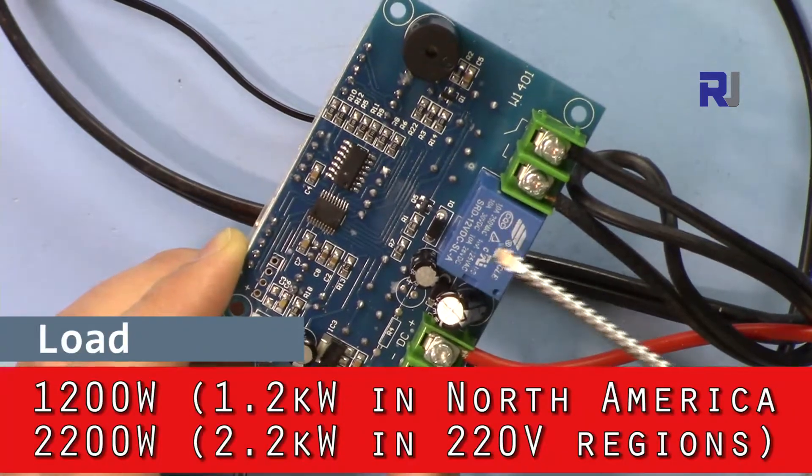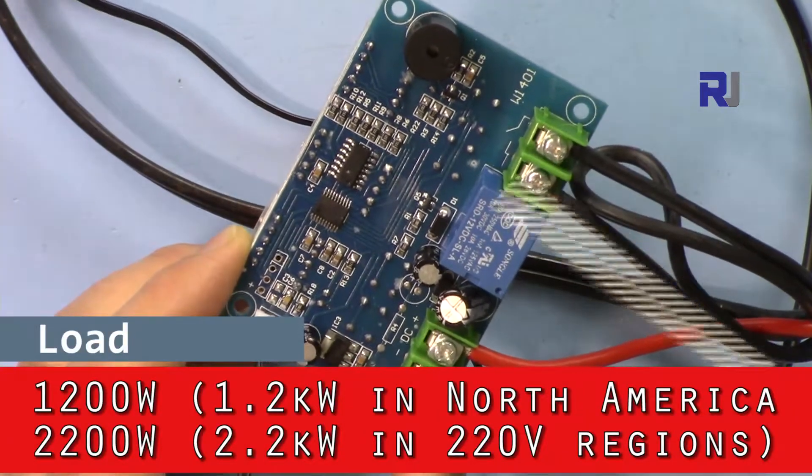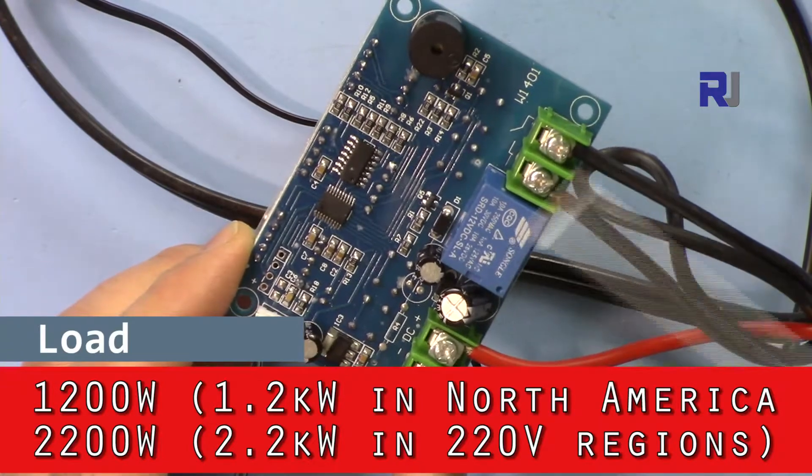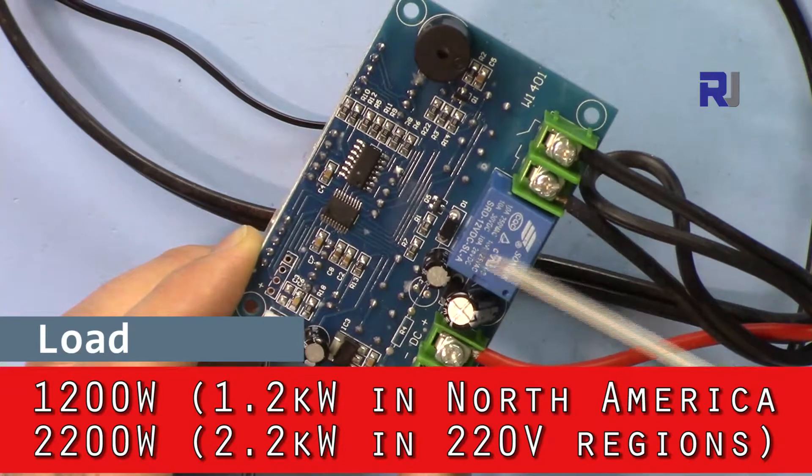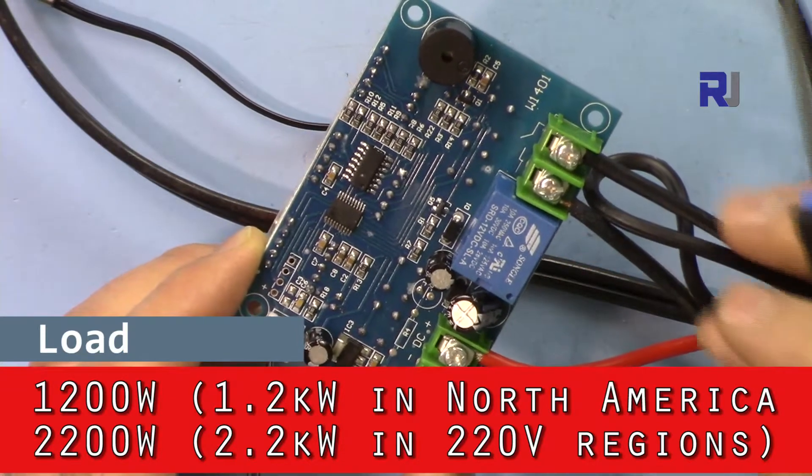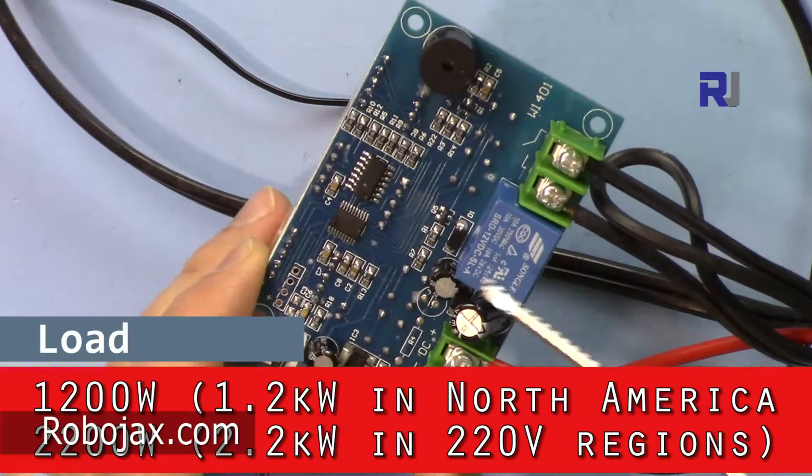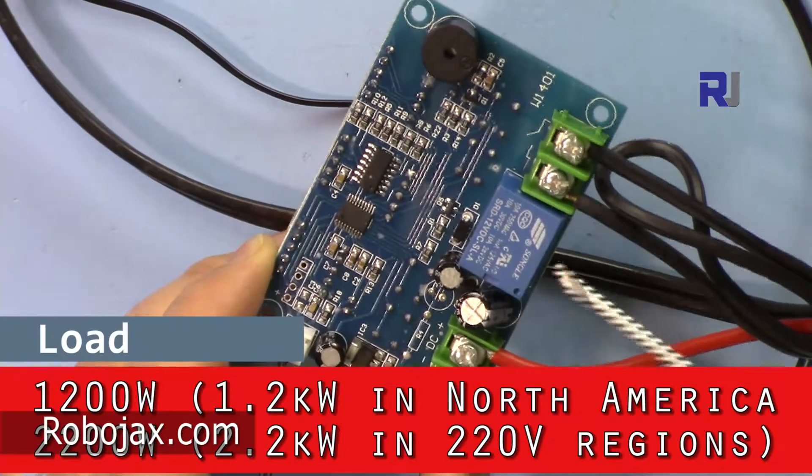10 times 120 will be 1200 watts can be controlled if you're in North America. If you are in Asia or Europe, 10 times 220 will be 2200 watts or 2.2 kilowatts. So this can control.